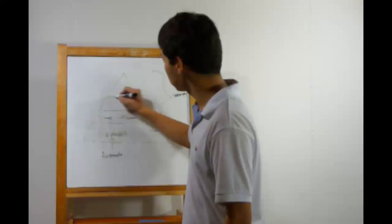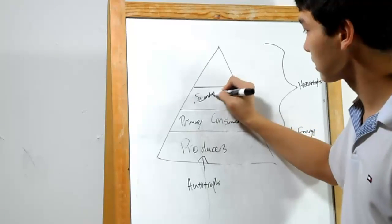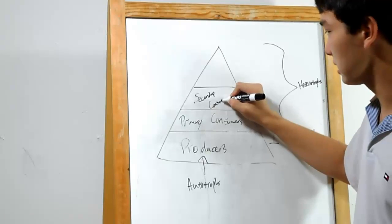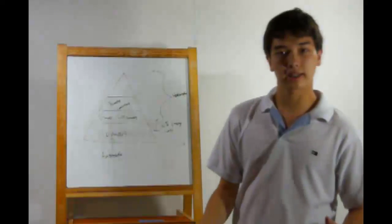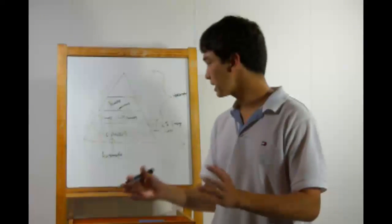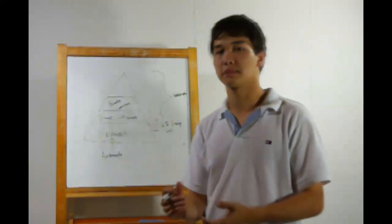Moving up, we get to the secondary consumers. See the pattern? The secondary consumers will eat the primary consumers. That'll be another 10% energy loss. Thus, the biomass of all the secondary consumers weighs less than the primary consumers.